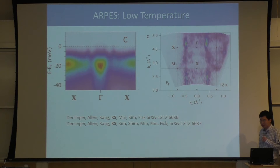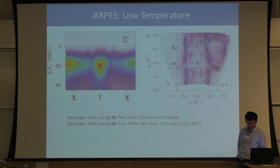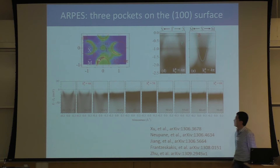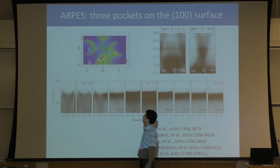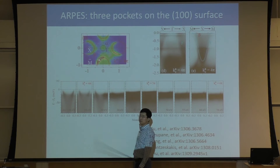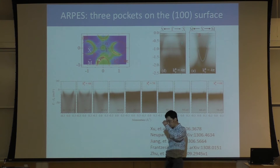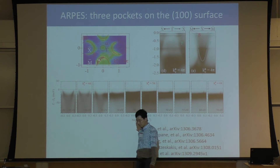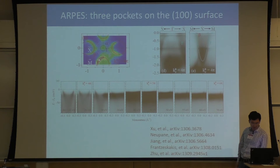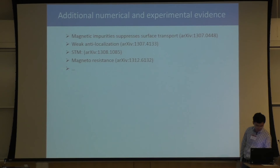ARPES can also see the surface states. Theory tells us there should be three surface Dirac cones: one centered at gamma, two centered at X. All high-resolution ARPES groups see the two big pockets around X, same as predicted. The gamma pocket is very small — most groups see it, but very recently one group claims they don't see the gamma pocket. Experimentalists need to figure out why that difference exists.